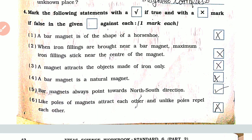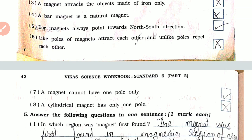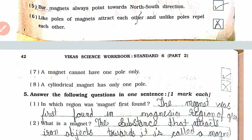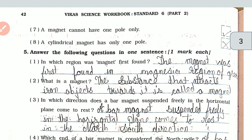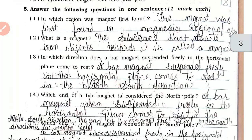Question number 4. Mark the following statements with a tick if true and with a cross if false in the given box against each. Number 1. A bar magnet has the shape of a horseshoe — False. When iron filings are brought near a bar magnet, maximum iron filings collect near the center of the bar magnet — False. A magnet attracts objects made of iron only — False. A bar magnet is a natural magnet — False. A bar magnet always points toward the north-south direction — True. Like poles of magnets attract each other and unlike poles repel each other — False. A magnet cannot have one pole — True. A cylindrical magnet has only one pole — False.